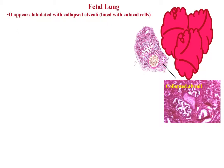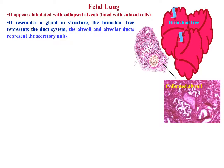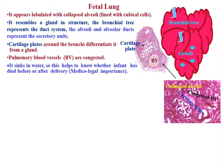Fetal lung appears lobulated with collapsed alveoli lined with cuboidal cells, resembling a gland in structure. The bronchial tree represents the duct system, while the alveoli and alveolar ducts represent the secretory units. Cartilage plates around the bronchi differentiate fetal lung from a true gland. Pulmonary blood vessels are congested, and fetal lung sinks in water — this helps determine whether the infant died before or after delivery, which is of medico-legal importance.